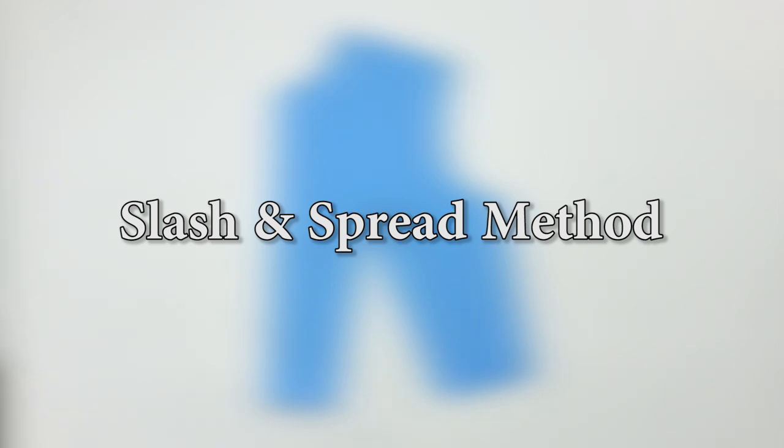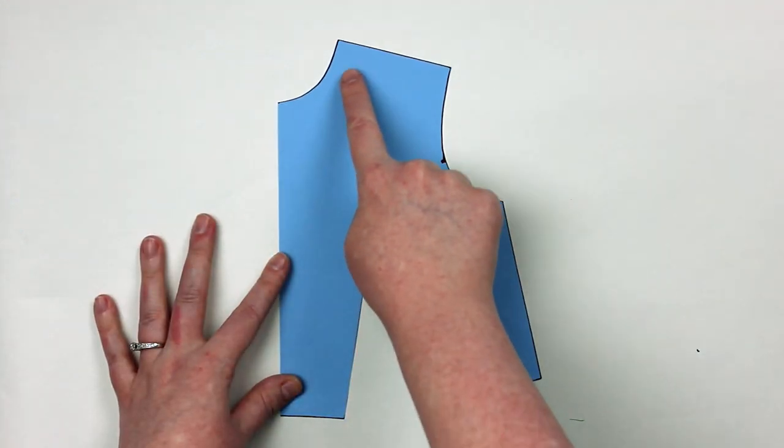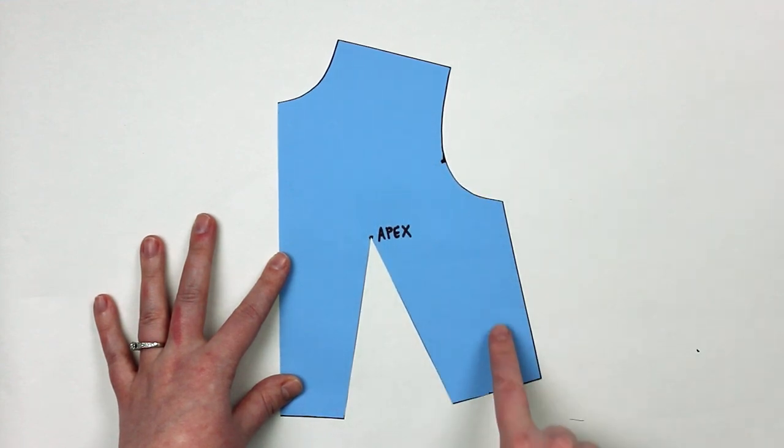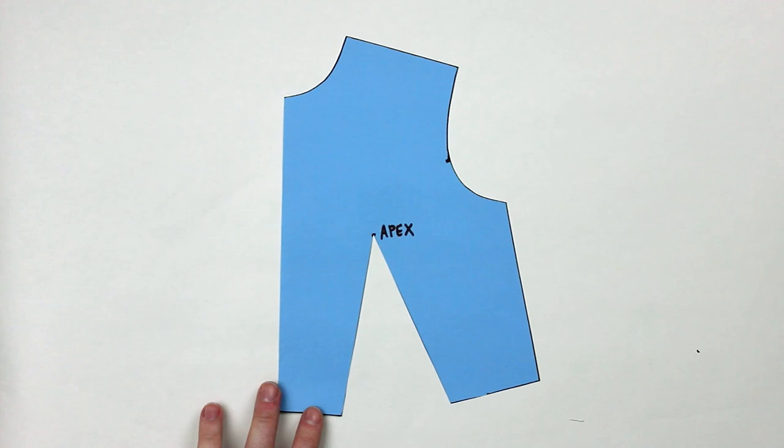The first method I'm going to show you today is called the slash and spread technique. As you can see on my mini pattern, I don't have any seam allowance. You can work with seam allowance if you feel comfortable doing it, but if this is your first time, it's always easier to start without seam allowance than to get yourself confused with all the different lines and things.